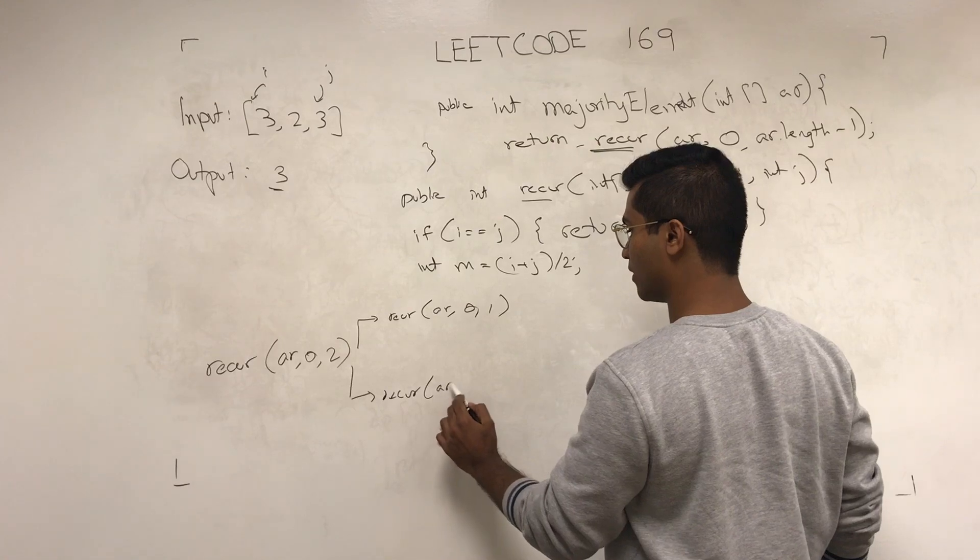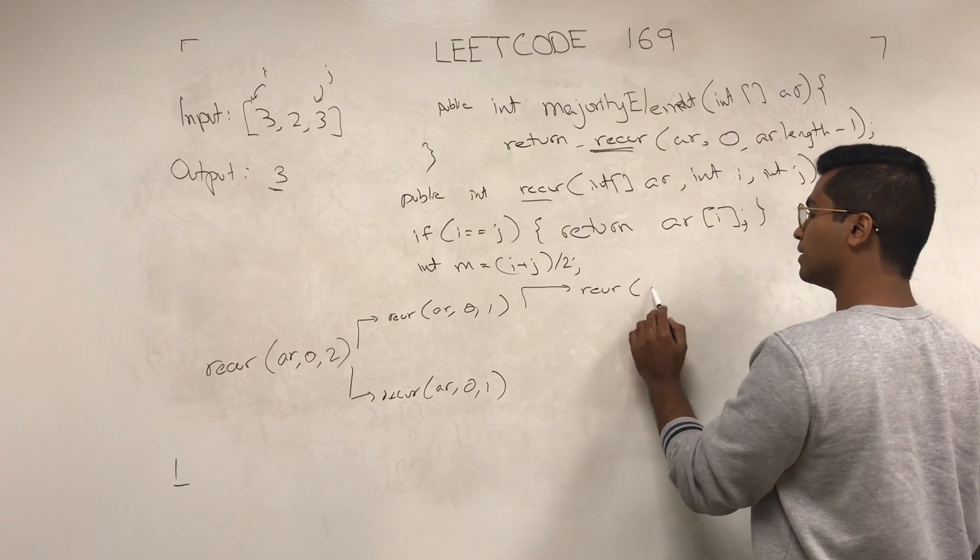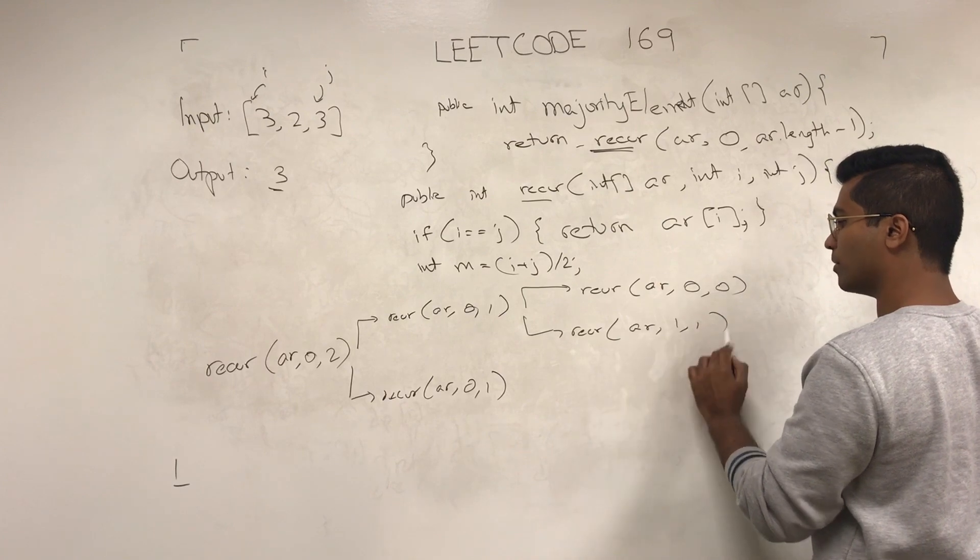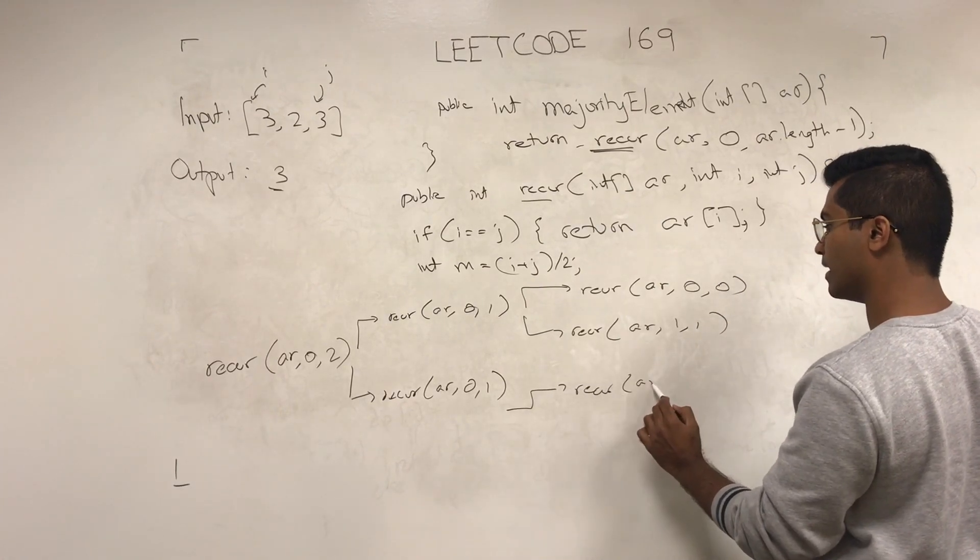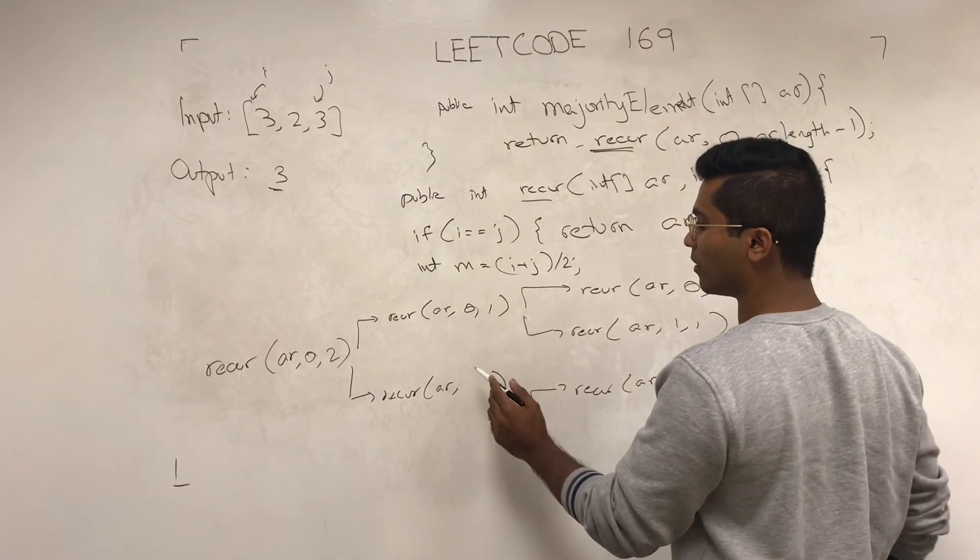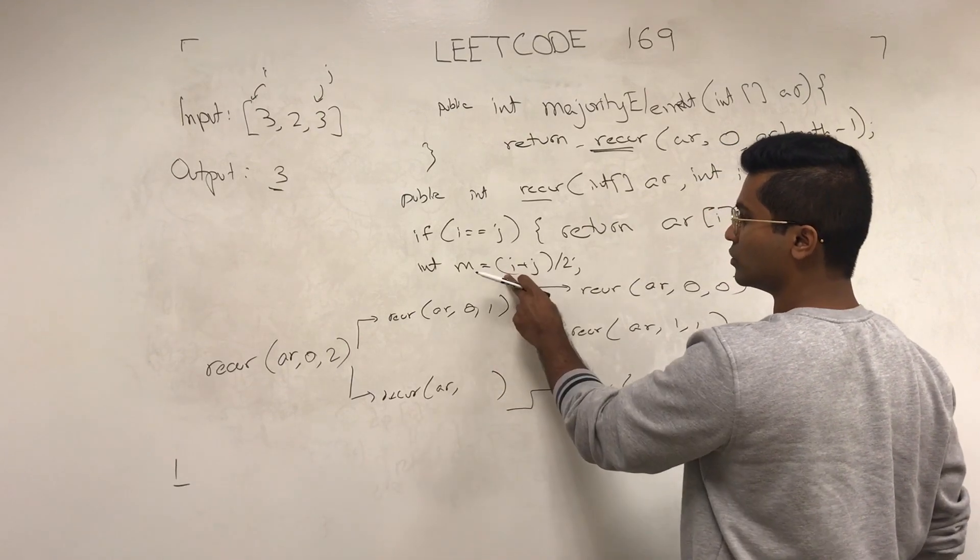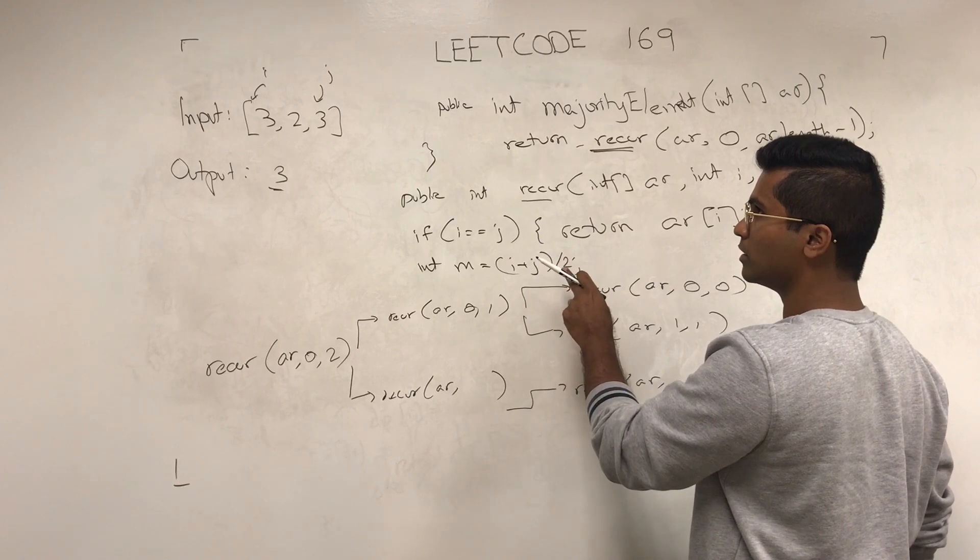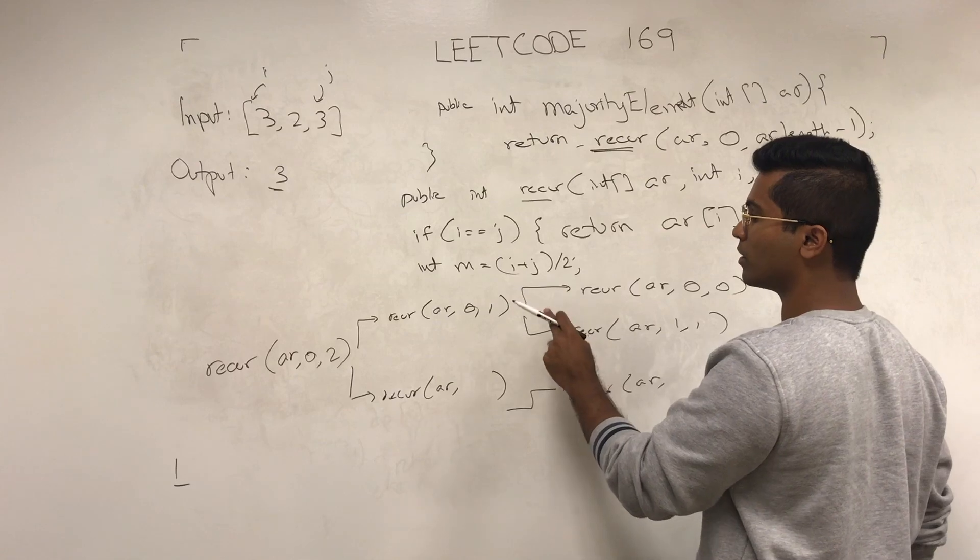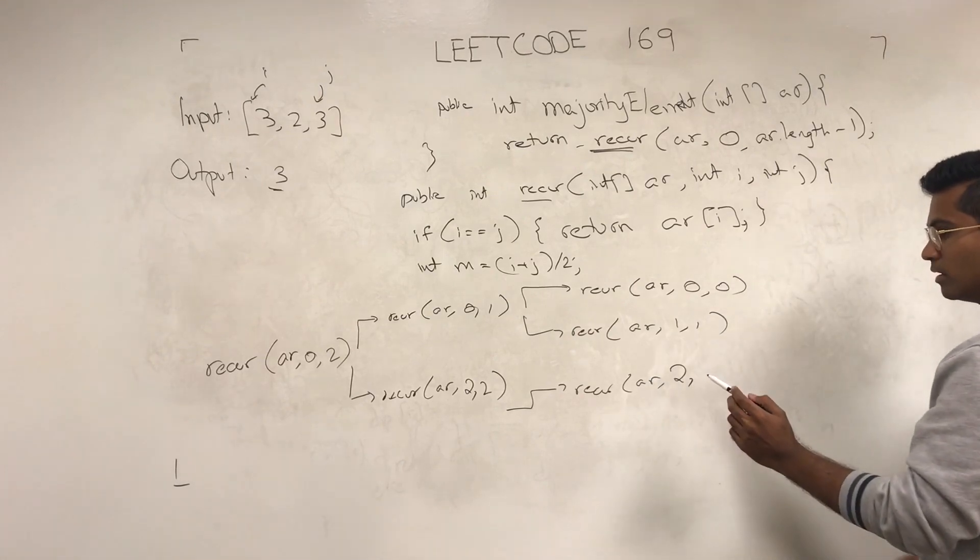This guy is going to call recur AR of zero and zero. He's also going to call recur AR of one comma one. He's going to call recur AR of, he's not calling zero and one, he's going to be calling m plus one, so it's going to be m is zero plus two divided by two is one, so this is going to be two comma two. He's going to call two.